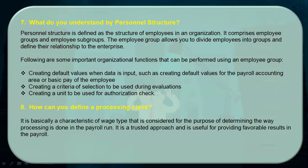The seventh question is what is personal structure. Personal structure is defined as the structure of employees in an organization, comprising employee groups and subgroups. These employee groups allow you to divide employees into further fragments and define their relationship to the enterprise. Important organizational functions you can perform include: creating default values when data is input such as for payroll accounting, creating selection criteria for evaluations, and creating a unit for authorization checks.